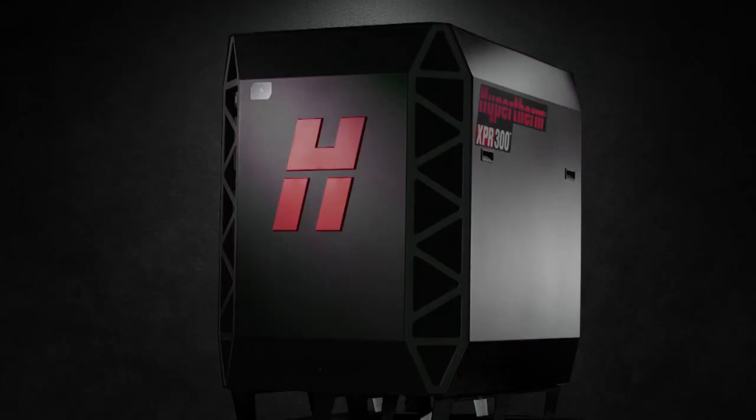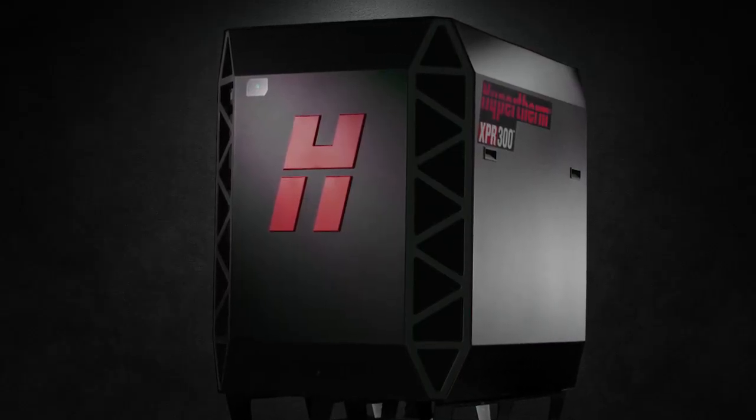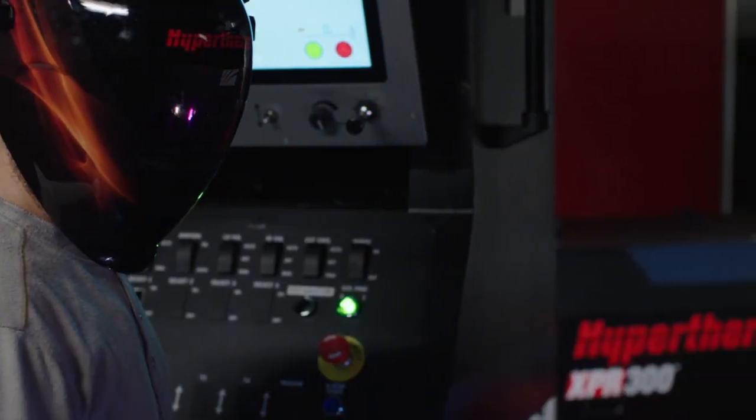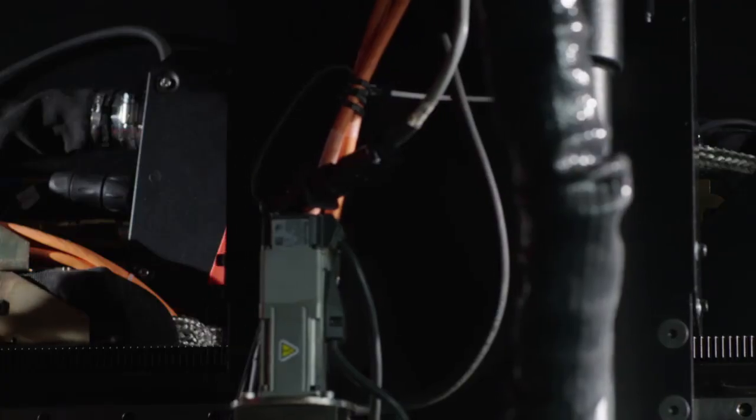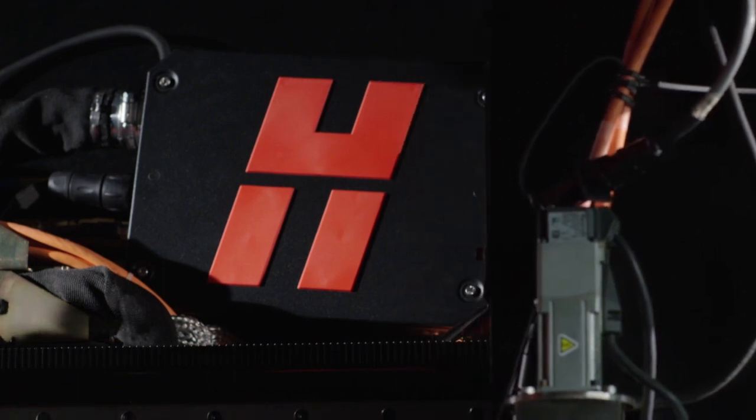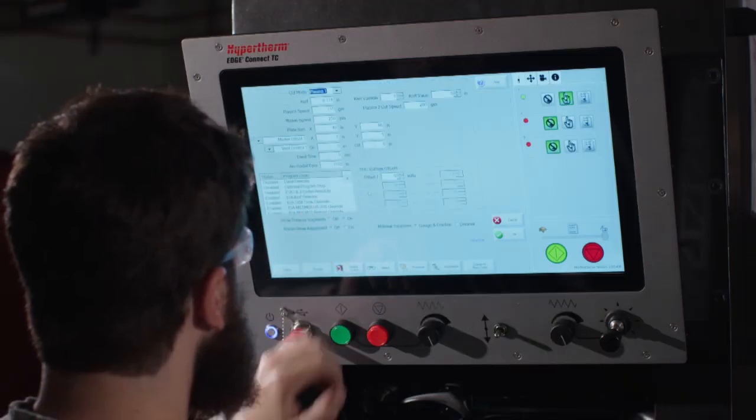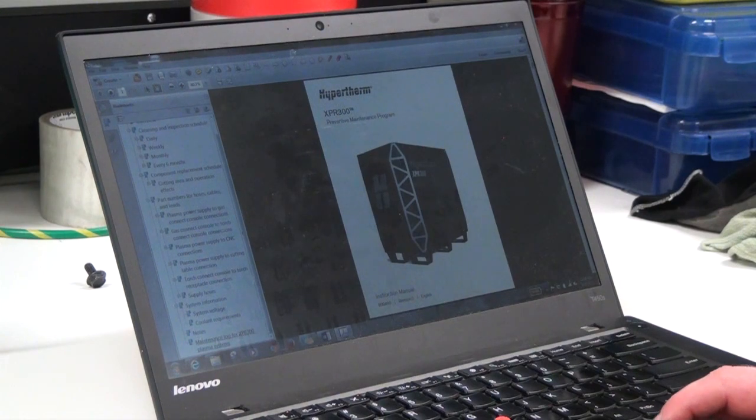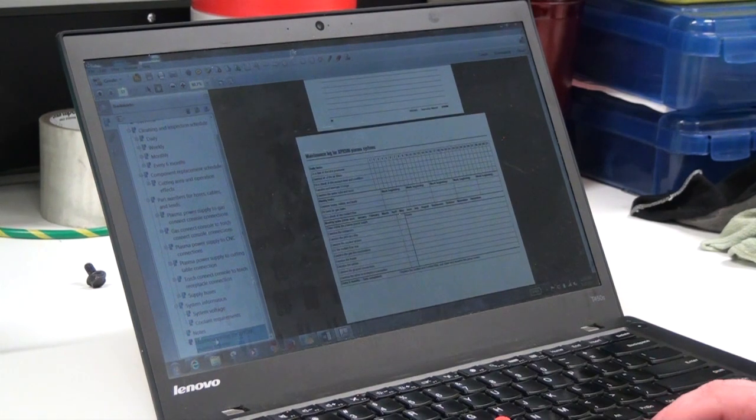This video covers monthly checks for the XPR system, but does not include other monthly checks that may be suggested by the table manufacturer or other components that you may have installed on your cutting system. Information on how to perform the monthly inspections can be found in the XPR 300 Preventative Maintenance Instruction Manual on Hypertherm's website.